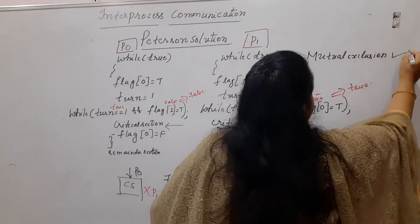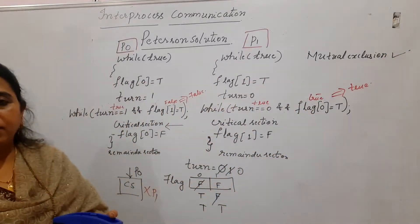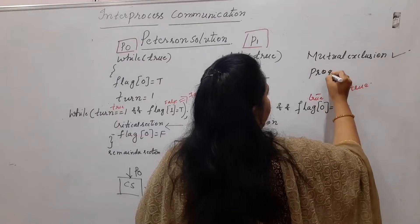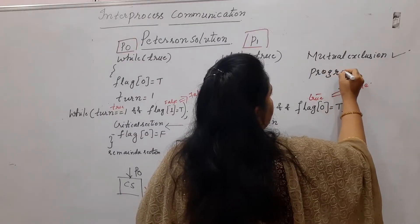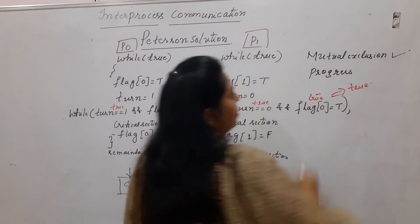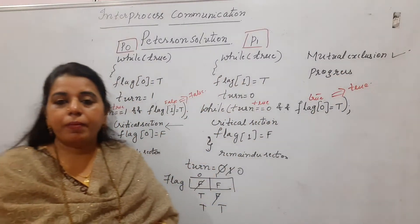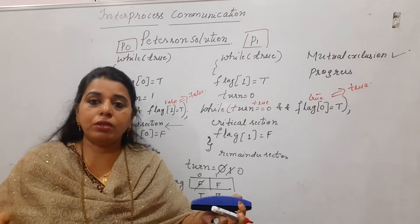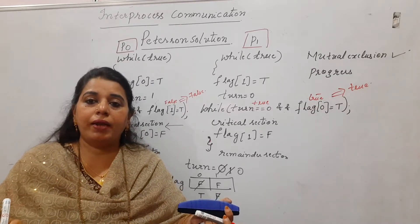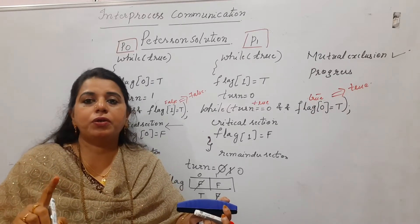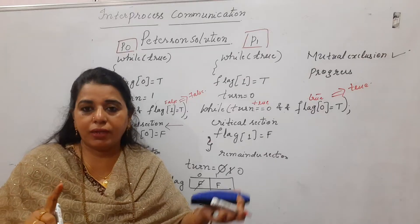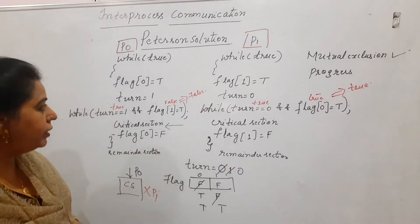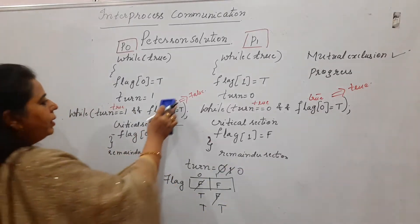Mutual exclusion is satisfied. Next we check whether the solution satisfies progress. In the previous solution both processes entered a deadlock state — that should not happen. Let us check whether Peterson's solution avoids deadlock.